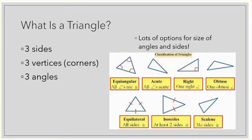As you know, a triangle has three sides. This means it also has three vertices. Those are the points at the corners, and because of that it has three angles. There's actually lots of different options for the size of these sides and angles.